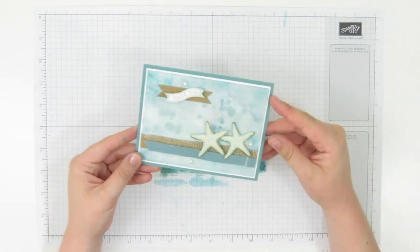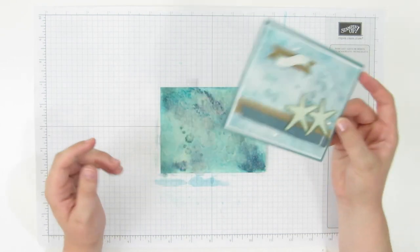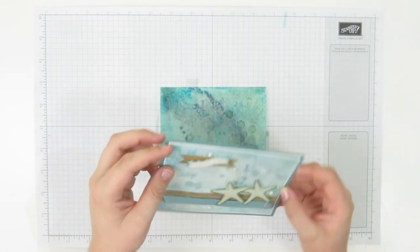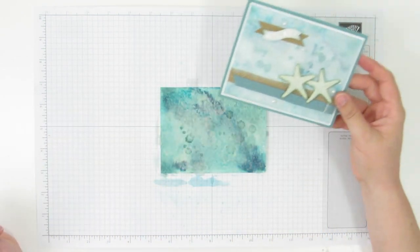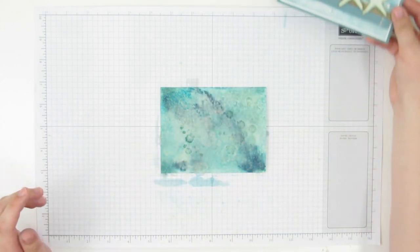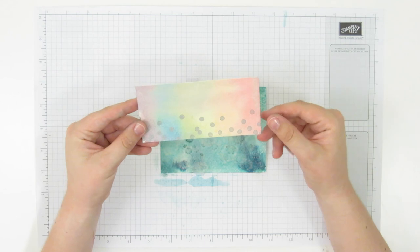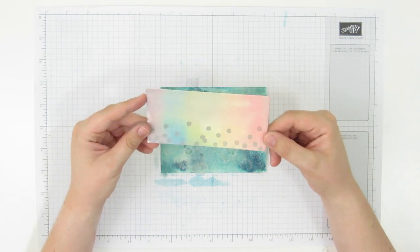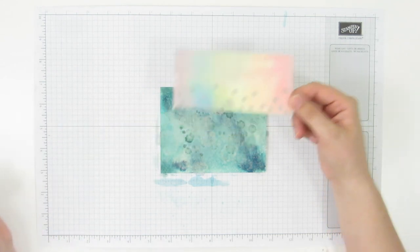So that's it. Now you can attach it to your card base however you want. I like to use fast fuse because it curls up a little bit usually. You can decorate it however you want. The rainbow example I showed you earlier, I stamped over top of it with some silver ink. I don't know if that's showing up for you all. But there you've got your watercolor background.